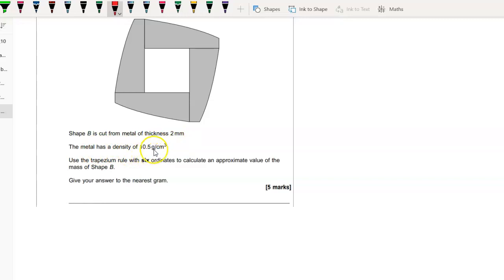The metal has a density of 10.5 grams per centimeter cubed. Now we all know density is mass over volume.